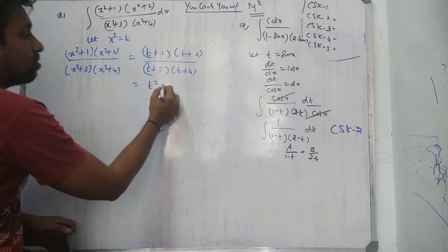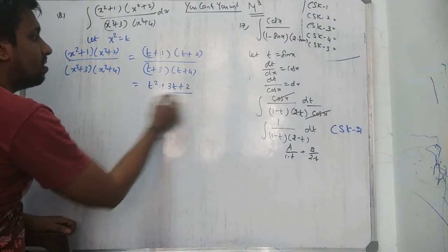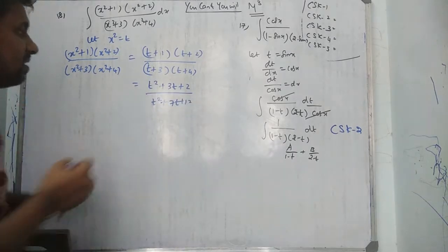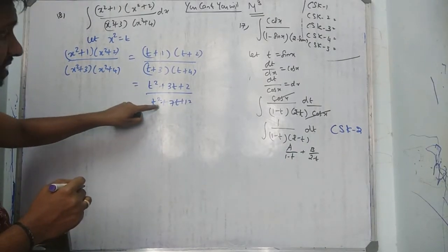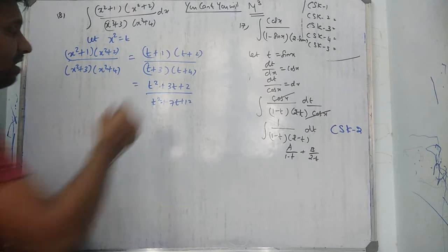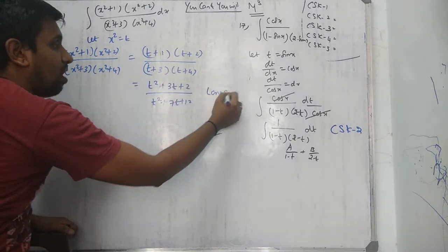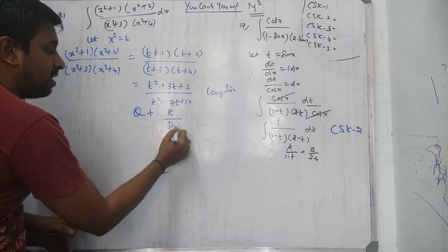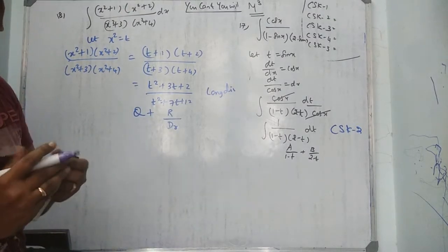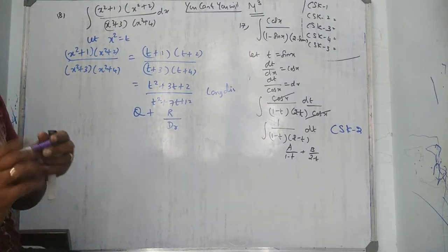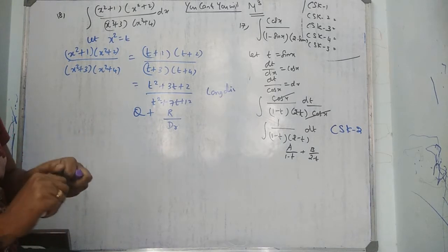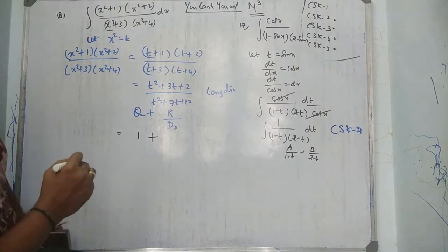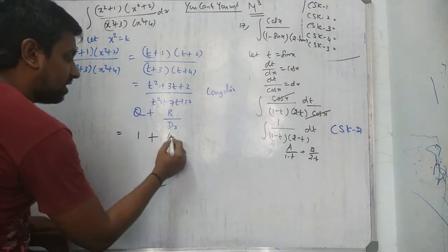Now expand: numerator is t² + 3t + 2, denominator is t² + 7t + 12. Since the highest power is the same in both, you have to use long division method. Quotient plus remainder over denominator. You will get quotient is 1 and remainder is 4t + 10.